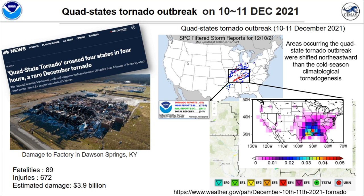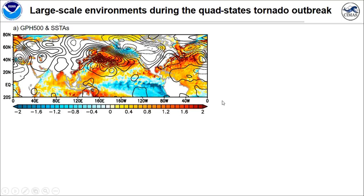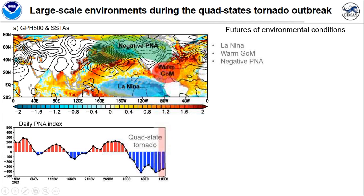Compared to the cold season climatology of tornado activity, the main development area of the quad-state tornado outbreak is shifted northward. We still don't know what caused this huge disaster — is it caused by climate change or just internal variability? We don't know yet. So to investigate the reason for this event, we will look at the large-scale environmental conditions during this cold-state tornado outbreak.